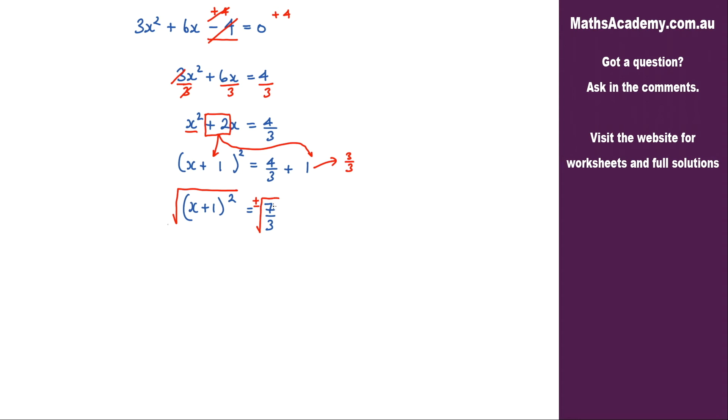When we take the square root of this number we will get a positive and a negative answer. On the left hand side the square root and the squared will cancel which leaves me with x plus 1 is equal to plus or minus the square root of 7 over 3.